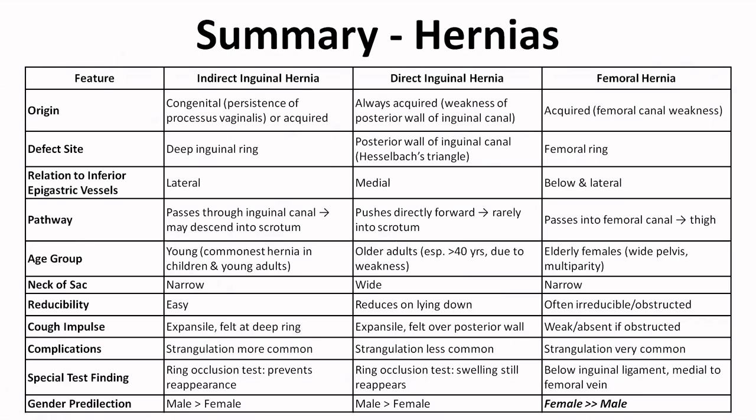An important point is the relation to inferior epigastric vessels. Indirect hernia comes through the deep inguinal ring and is lateral to the vessel, whereas direct inguinal hernia is a defect in the posterior wall of the inguinal canal through Hesselbach's triangle, making it medial to the inferior epigastric vessels. That is what you have to remember when differentiating the various hernias.